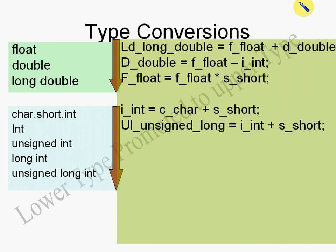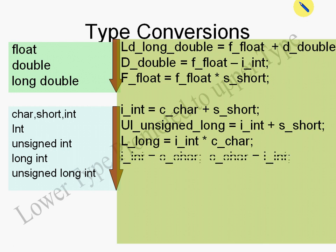The pattern is getting clear: always convert the lower type to the upper type. In any expression, it's very easy to perform these conversions. If an operand is unsigned long, the other operand also gets converted to unsigned long — so int and short get converted to unsigned long. Similarly, if you have a long, convert everything else to long.